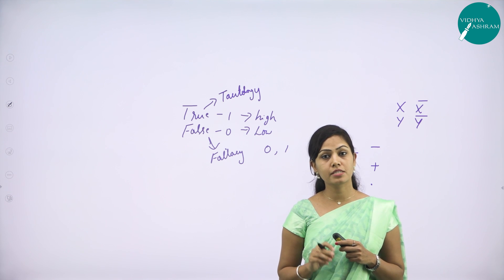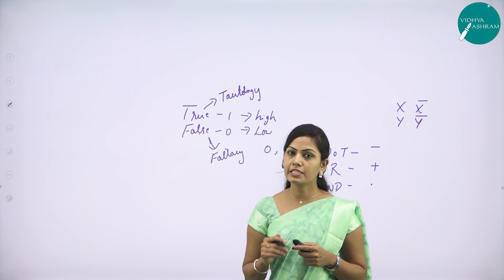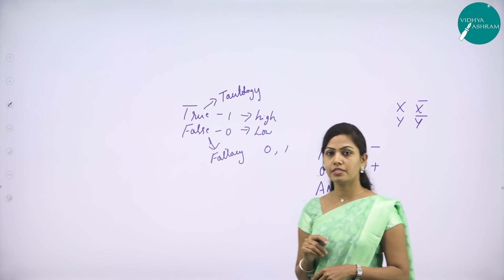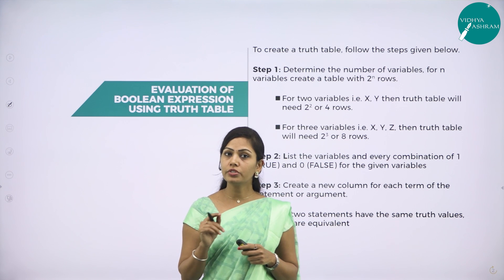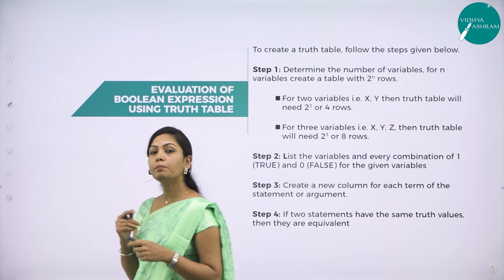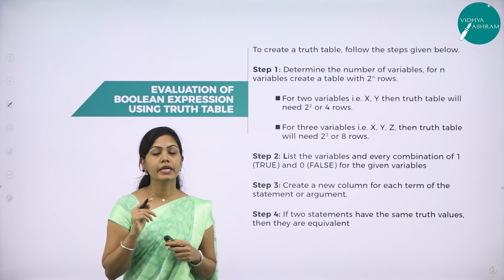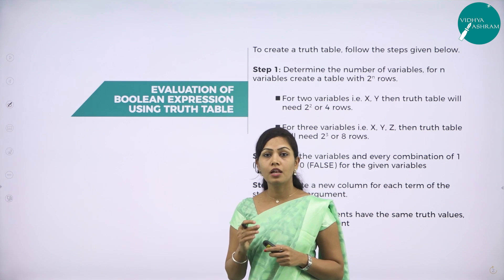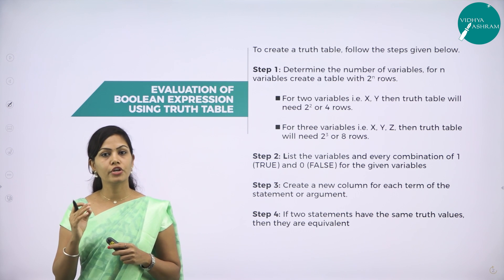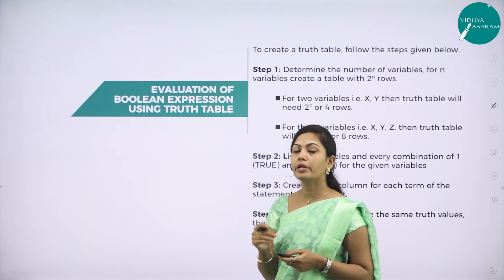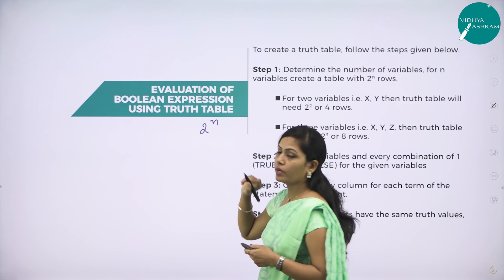These are the logical operators I explained in my previous session. Today I am going to discuss evaluation of Boolean expressions using truth tables and logic gates. A truth table is a table which represents all the possible values of logical statements along with all the possible results for the given combinations of values. Logical variables are combined by means of logical operators — AND, OR, NOT — to form a Boolean expression. For representing the possible values, we use the formula 2 power n.